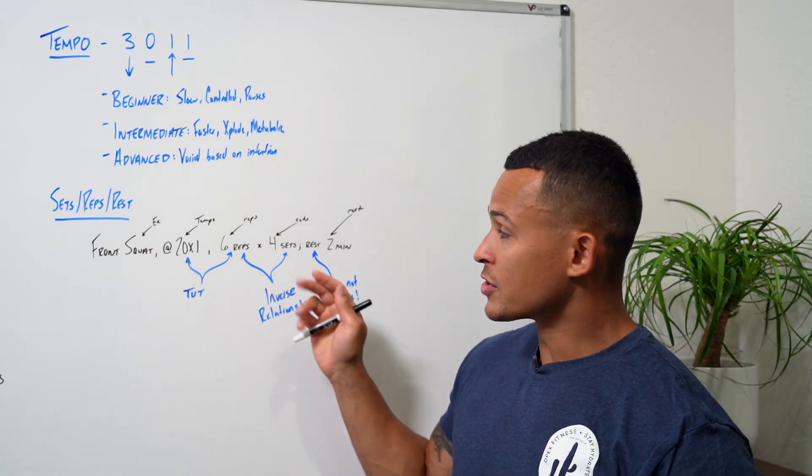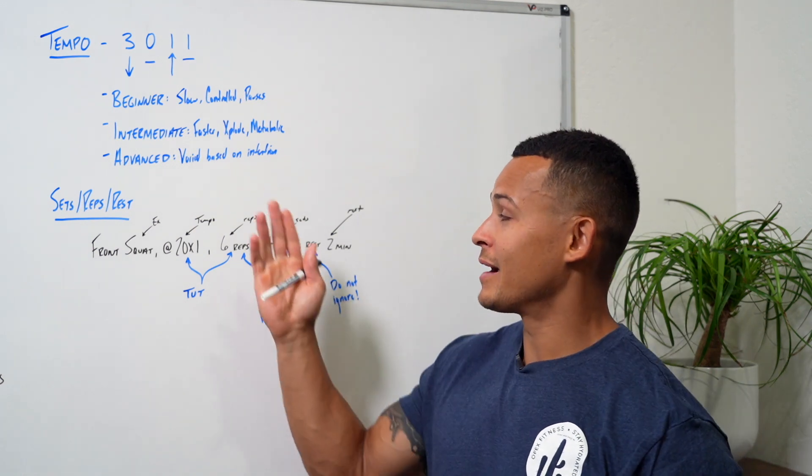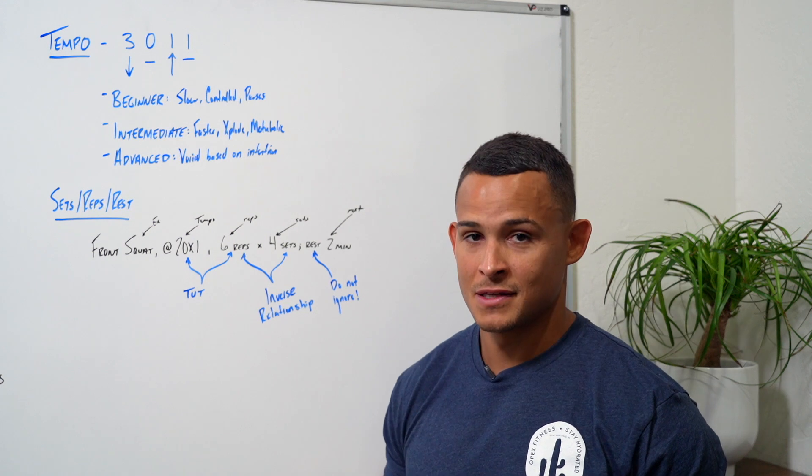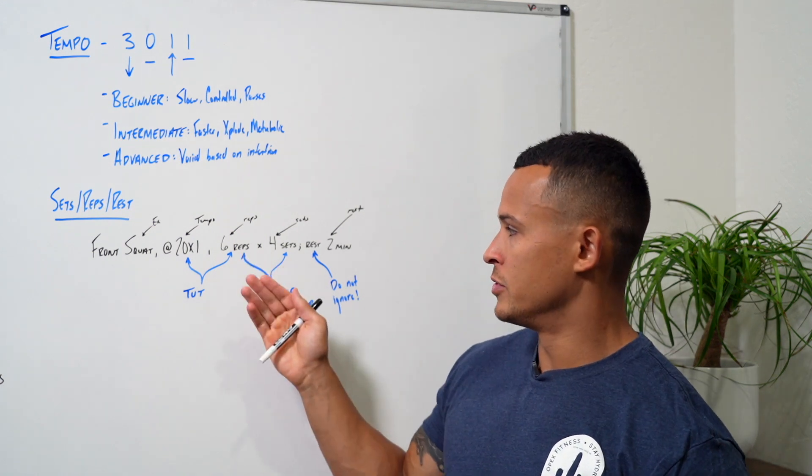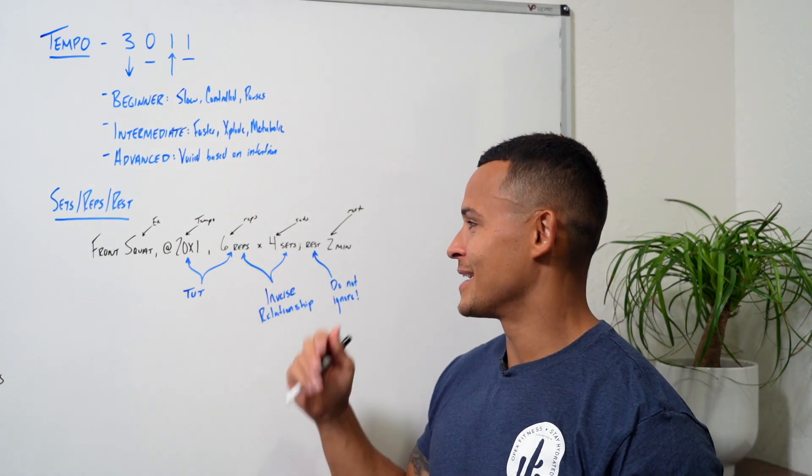So first, let's talk about the inverse relationship that reps and sets have. Principally, when you have high reps, you have lower sets. So if I wanted to do 12 reps on the front squat, I'm not doing times 10 sets.